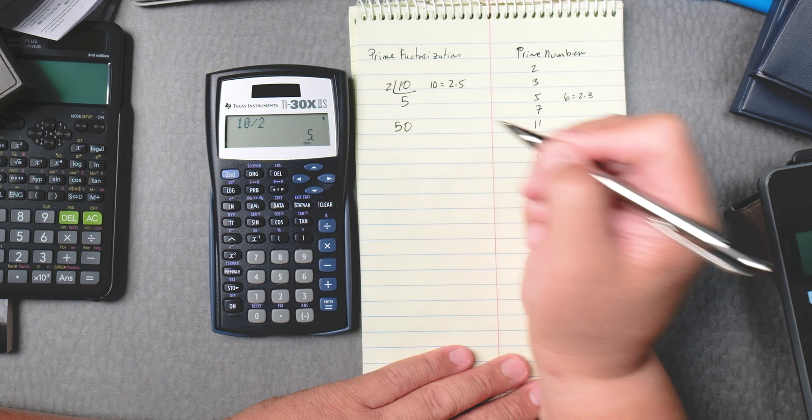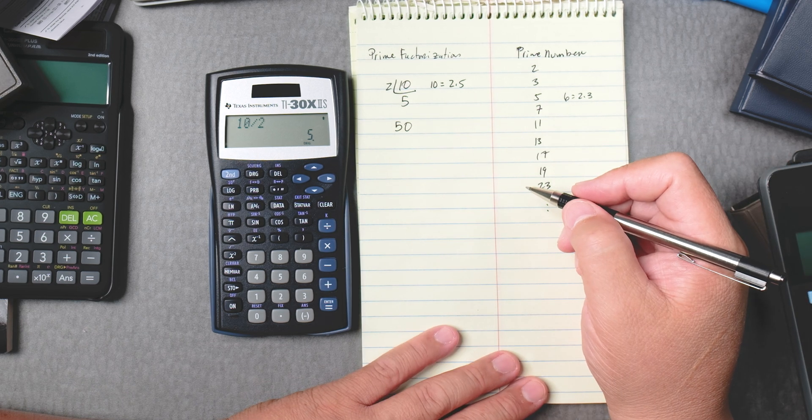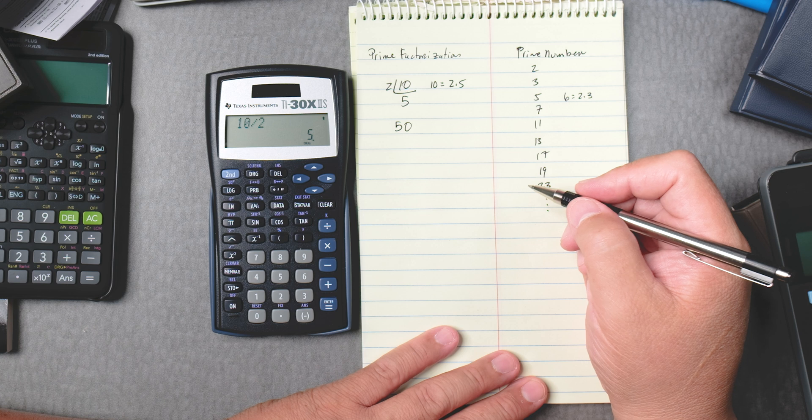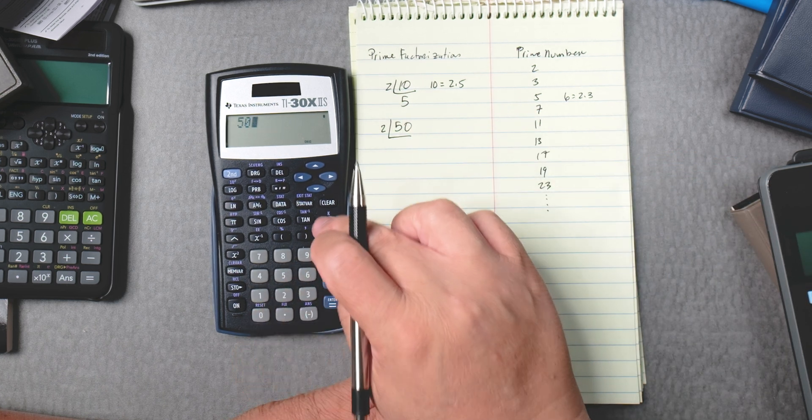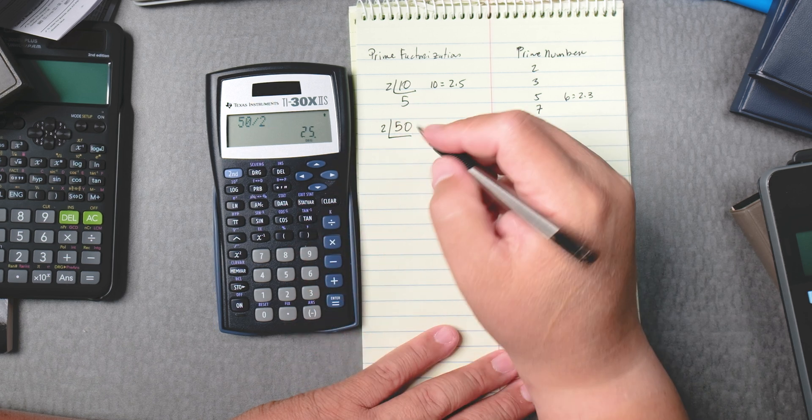50. Can we break down 50 into prime numbers to do the prime factorization? Yes, it ends in zero. So we know that 2 goes into 50. So we can type 50 divided by 2. Enter. It gives you 25.